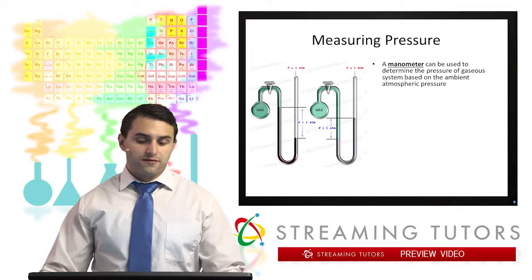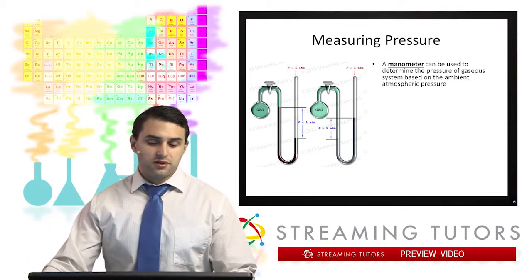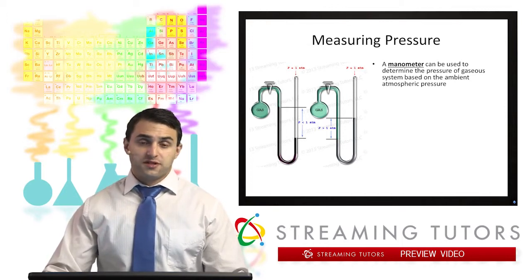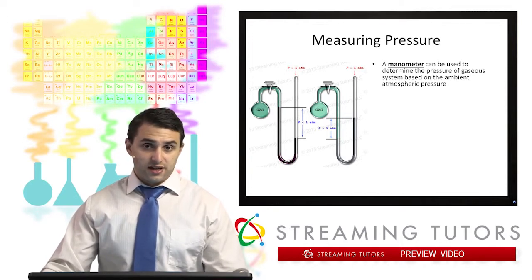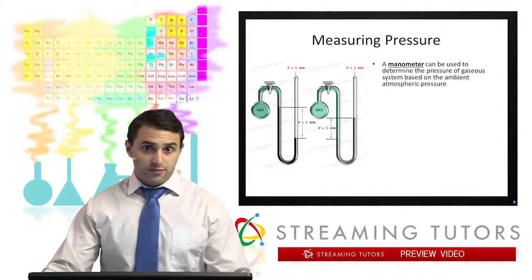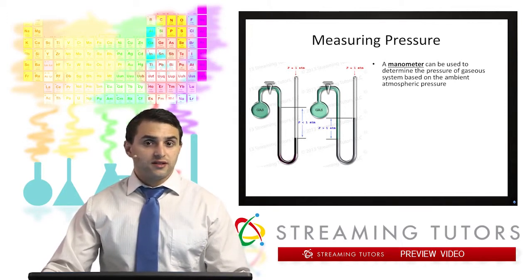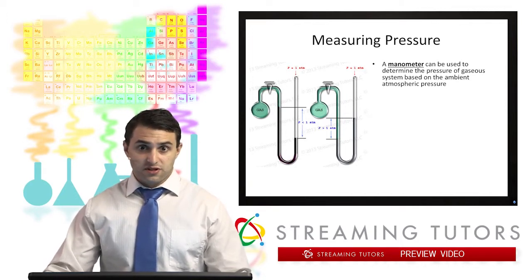If you want to measure pressure, we can do that in the following way. This device here is called a manometer, and it's just a way to determine the pressure of a gaseous system. We have our gas in our container on the left, and then we have the system exposed to atmospheric pressure. We're going to measure the pressure of a gaseous system based on the comparison of the system's pressure to the atmospheric pressure. We have mercury in this U-shaped tube, and as pressure changes between atmosphere and the system, that mercury is going to be pushed either towards the container or towards the end of the tube, depending on the difference between the atmospheric pressure and the system pressure.